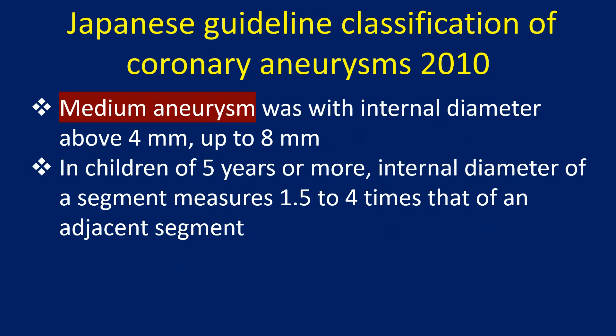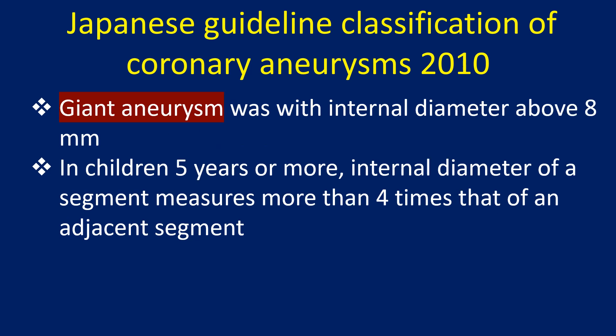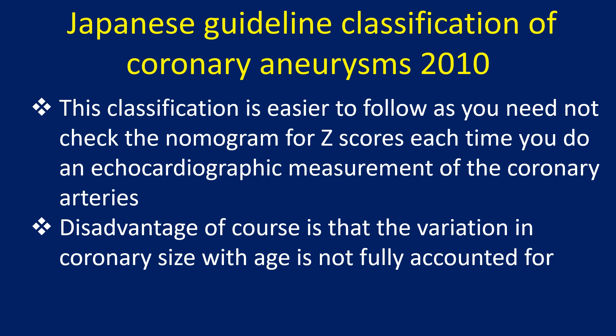Medium aneurysm was with internal diameter above 4 mm up to 8 mm; in children of 5 years or more, the internal diameter measures 1.5 to 4 times that of an adjacent segment. Giant aneurysm was with internal diameter above 8 mm; in children 5 years or more, internal diameter measures more than 4 times that of an adjacent segment. This classification is easier to follow, as you need not check the nomogram for SED scores each time you do an echocardiographic measurement. The disadvantage is that variation in coronary size with age is not fully accounted for.